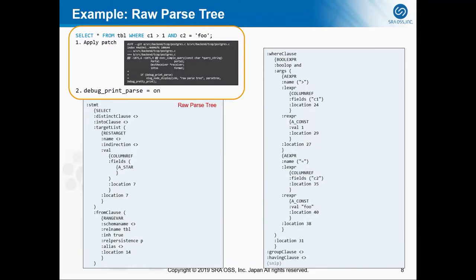So next I will show you how to output this raw parse tree to your log file. First, you need to apply this patch to your source code, and next you need to turn on the debug_print_parser parameter, so that you can see the raw parse tree printed out in your log file.